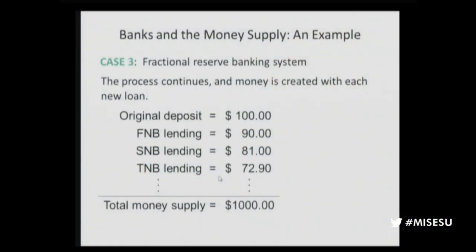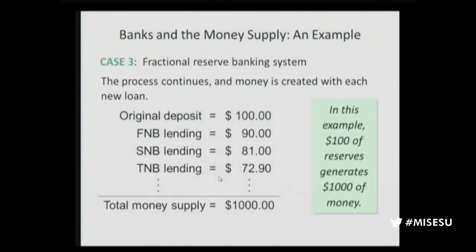In his 1912 book, Mises speaks as if this is obviously what's happening. In this example, $100 of reserves generates $1,000 of money. So if you graduate from college and your generous aunt gives you $1,000, and you put it into your checking account, that will ultimately create $10,000 in the economy — $10,000 in deposit dollars. You have to subtract the $1,000 of currency you put in, so it creates $9,000 new dollars: the $10,000 in deposits minus the $1,000 in currency taken out of circulation.